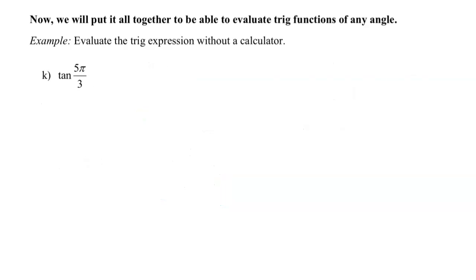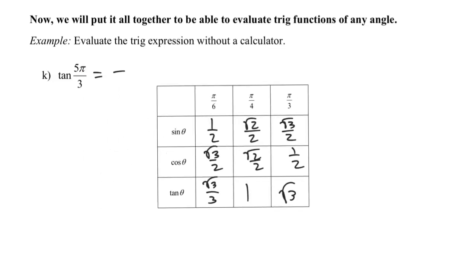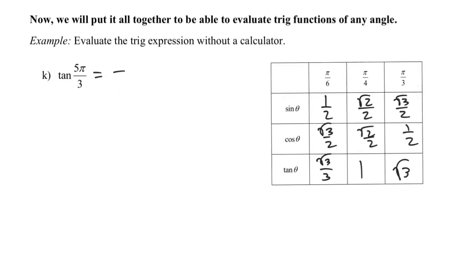Last example: we just did five pi over three and determined it was in quadrant four. Tangent in quadrant four is negative, so the answer is going to be negative. The last thing I need to know is the tangent of pi over three. Looking at my values, tangent of pi over three is the square root of three. So the answer is negative square root of three. That took about 29 seconds to explain, but could have been done in much less time without the teaching narration.